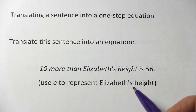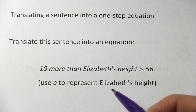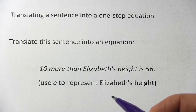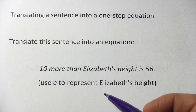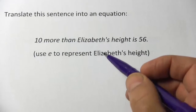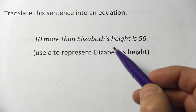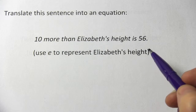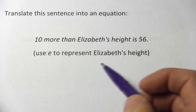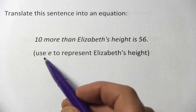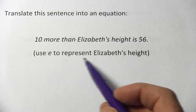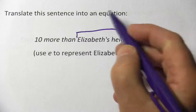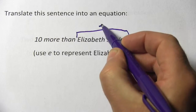Here we have a sentence that we need to translate into an algebraic equation. It says '10 more than Elizabeth's height is 56.' There's a note that says use the letter E to represent Elizabeth's height, so this right here will be E.